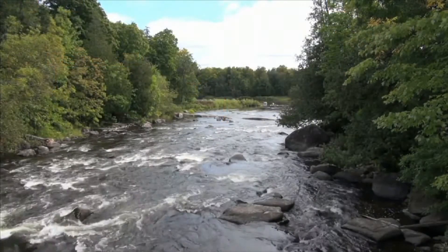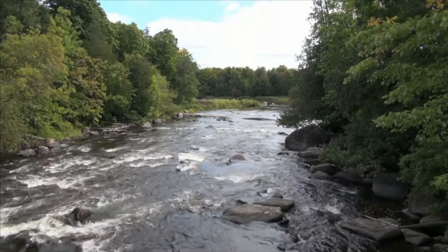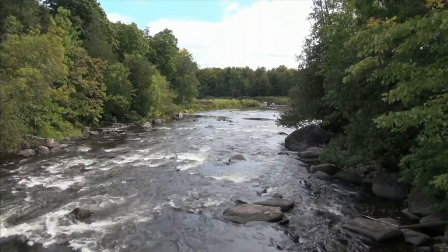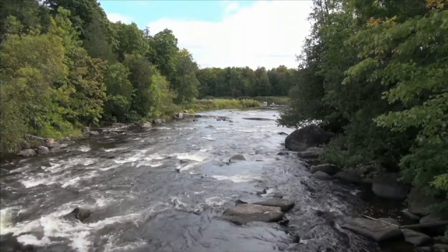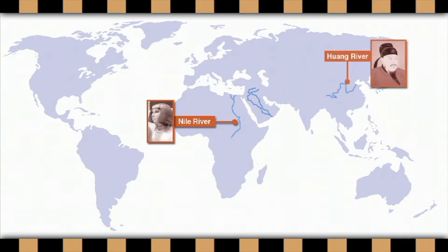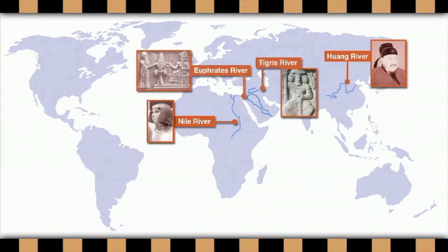Many early civilizations began along major river systems. Egyptians along the Nile River, the Chinese Empire along the Huang River, and the Mesopotamian countries along the Tigris and Euphrates.